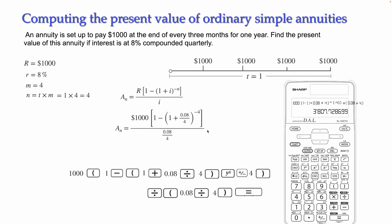The calculator gives $3,807.73 rounded to two decimal places. So if you want to receive $1,000 every three months for one year at this interest rate, you will need to pay $3,807.73 for the annuity. The value of the annuity is $3,807.73, and with that I finish the explanation of this problem.